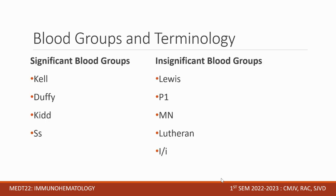Significant blood groups include the Kell, Duffy, Kidd, and MNS blood group systems. Insignificant blood groups include Lewis, P1, MN, Lutheran, and I. Insignificant does not mean we don't study them — it only means they rarely cause transfusion reactions.